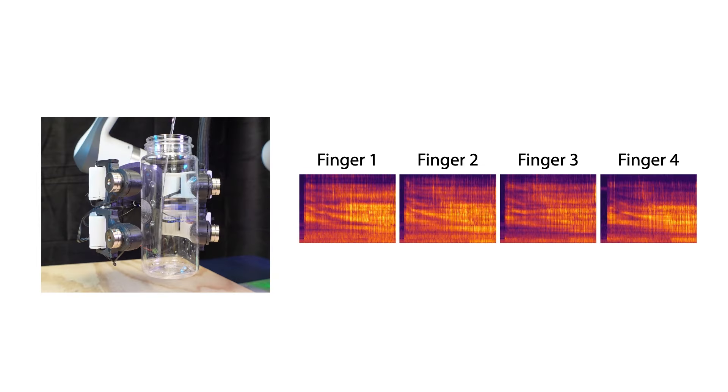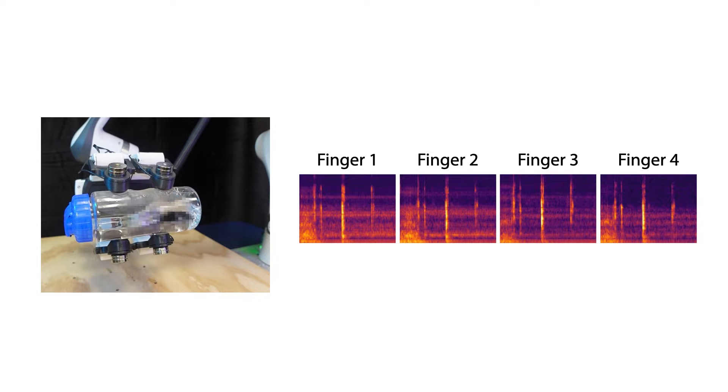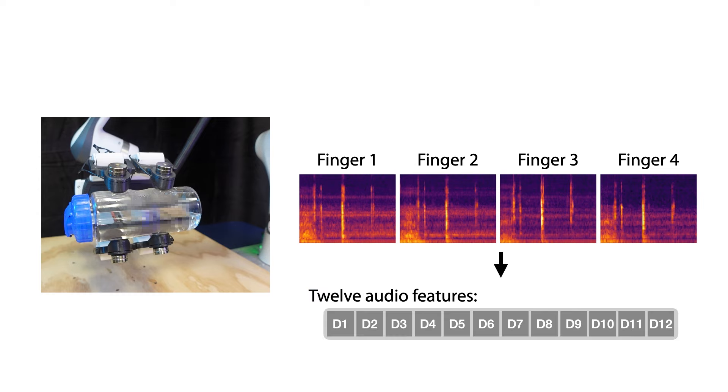Our robot can infer the geometry and inventory status of various objects inside a container from their unique acoustic vibration signatures during interactions. We derived 12 interpretable features based on traditional acoustic signal processing methods to help distinguish these different acoustic vibration signatures.